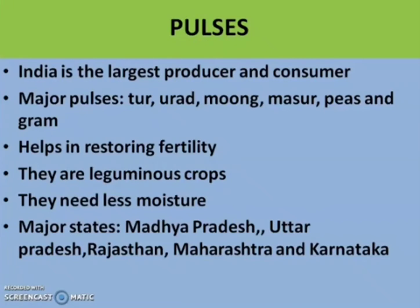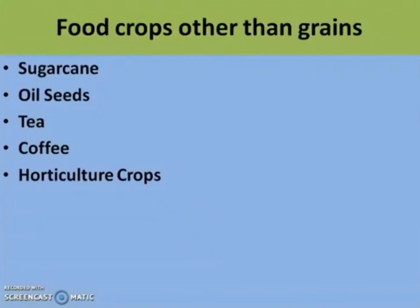The next category is food crops other than grains. In North India we get chapati and in South India we get rice — these are grain-based foods. Other than these, we have non-grain food crops which include vegetables, fruits, sugarcane, tea, etc. The major food crops other than grains in India are sugarcane, oilseeds, tea, coffee, horticulture crops, etc. We are moving to the first one: sugarcane.